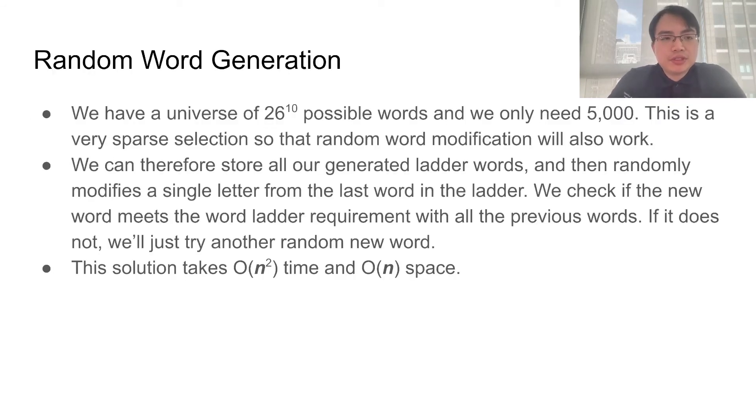Our last type of solution is called random word generation. This is based on the fact that we have a word universe of 26 to the power of 10 possible words, which is much bigger than the number of words that we need. So here, we have a very sparse selection problem, and random word modification will also work.